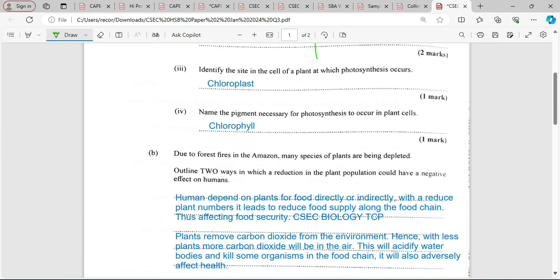Name the pigment necessary for photosynthesis to occur in plant cells. That's going to be chlorophyll. Chlorophyll traps the light energy, and magnesium is needed for the plant to be successful.